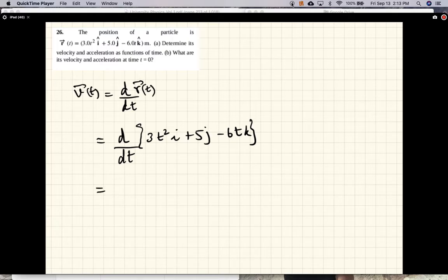You are taking the derivative of each term, term by term. Derivative of t squared is 2t, 2 times 3 is 6, so that's 6t. Derivative of the constant is 0 and derivative of t is 1, so that would be minus 6.